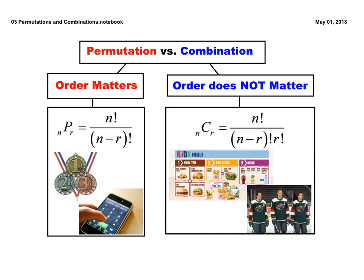Permutation is linked with when order matters. So in all these instances, order matters — like first, second, third place, passcodes for phones, passwords for emails, any of that kind of stuff. The order is definitely going to matter. Zip code, order matters. License plate, order matters. All of those things.